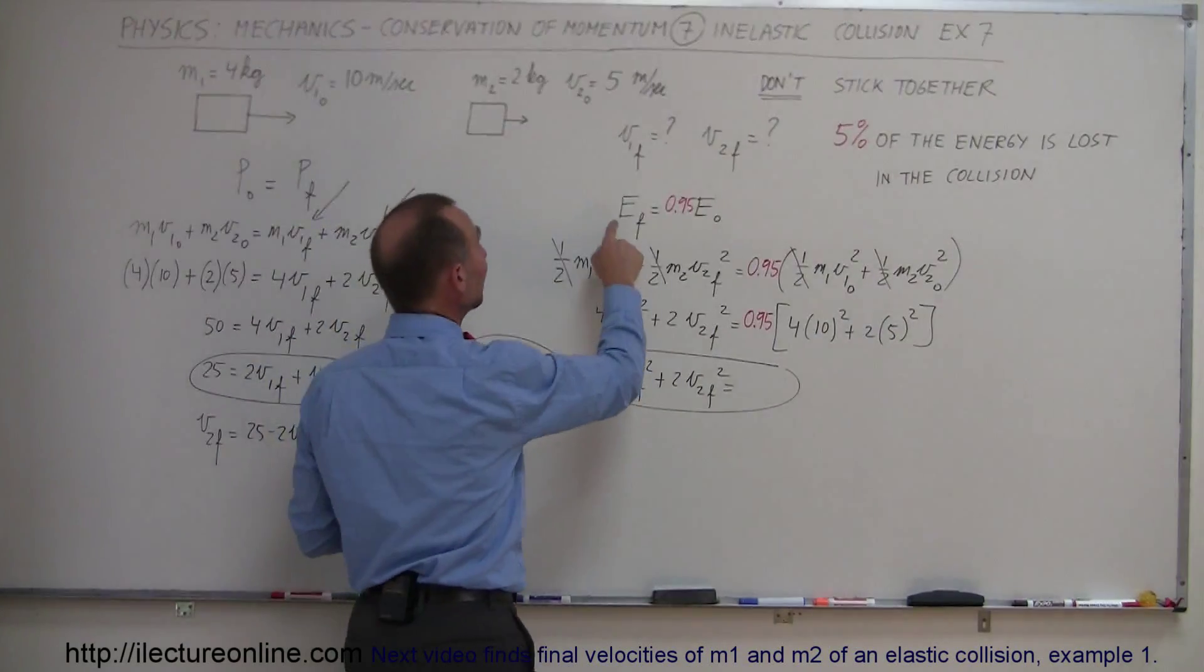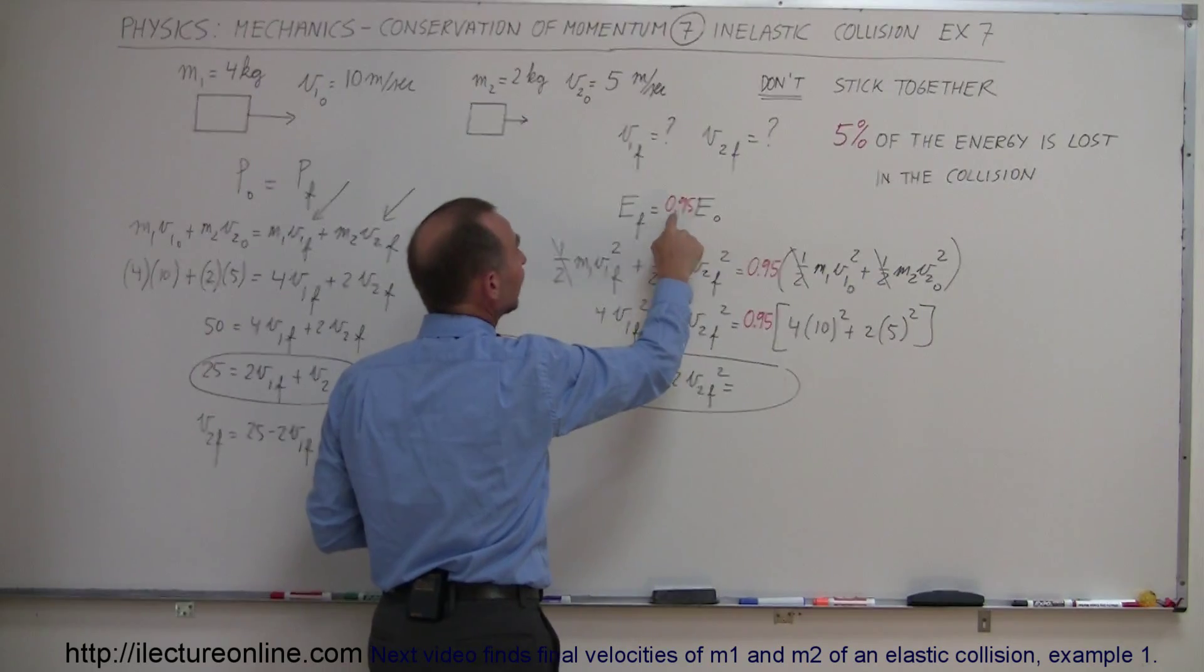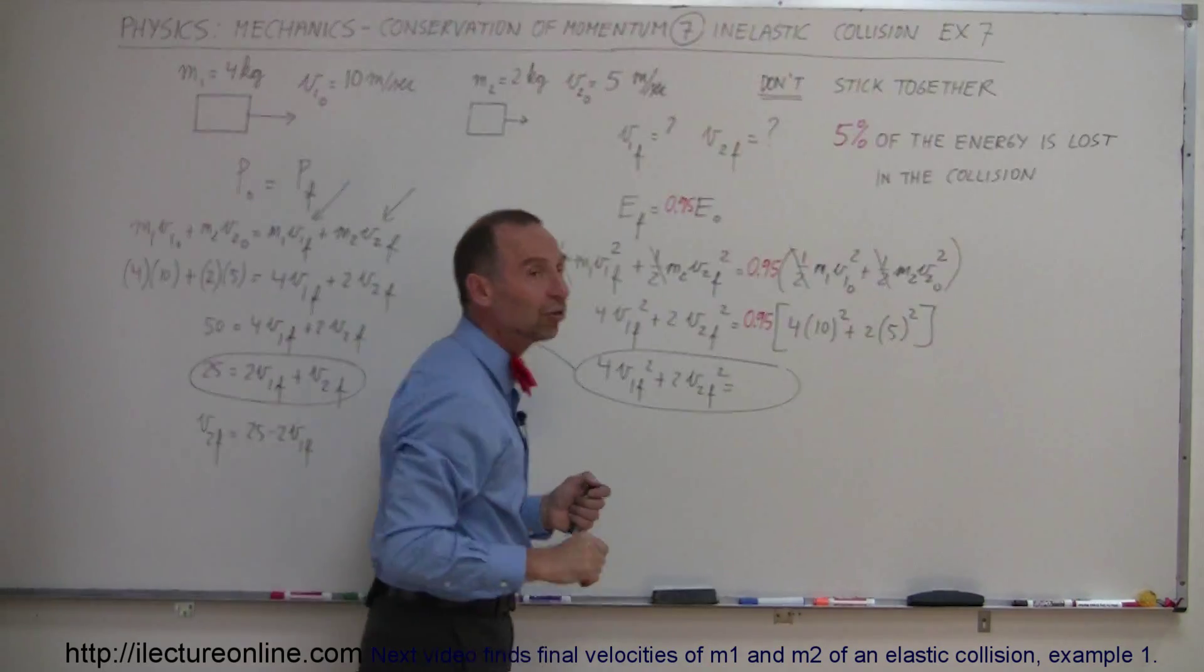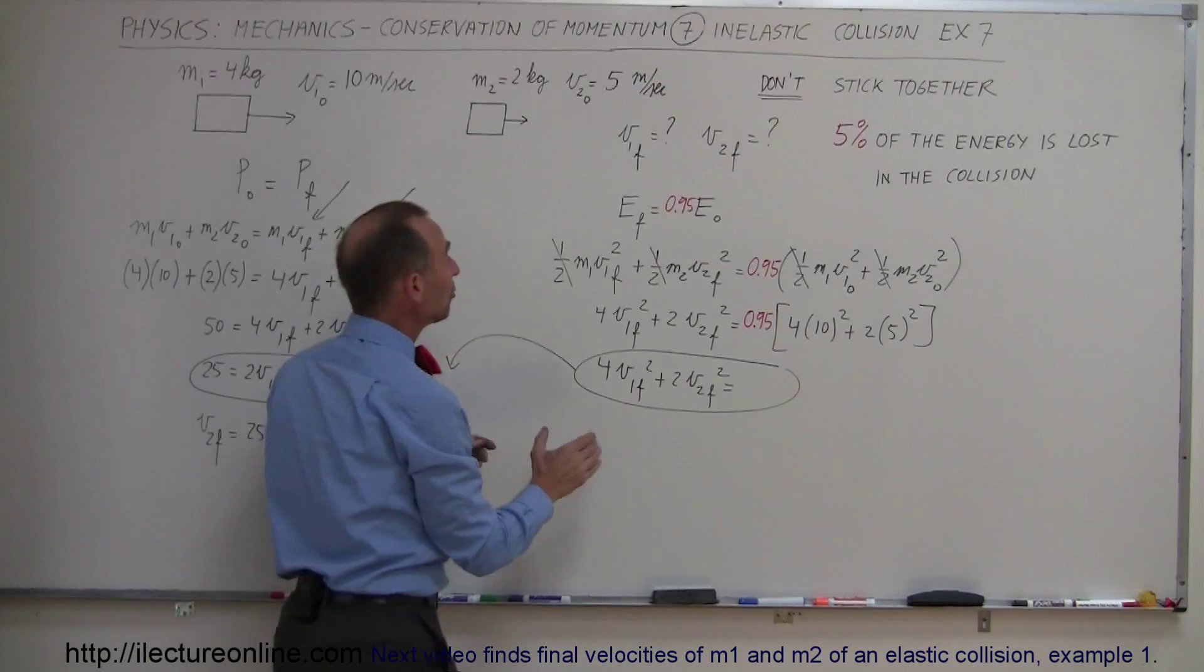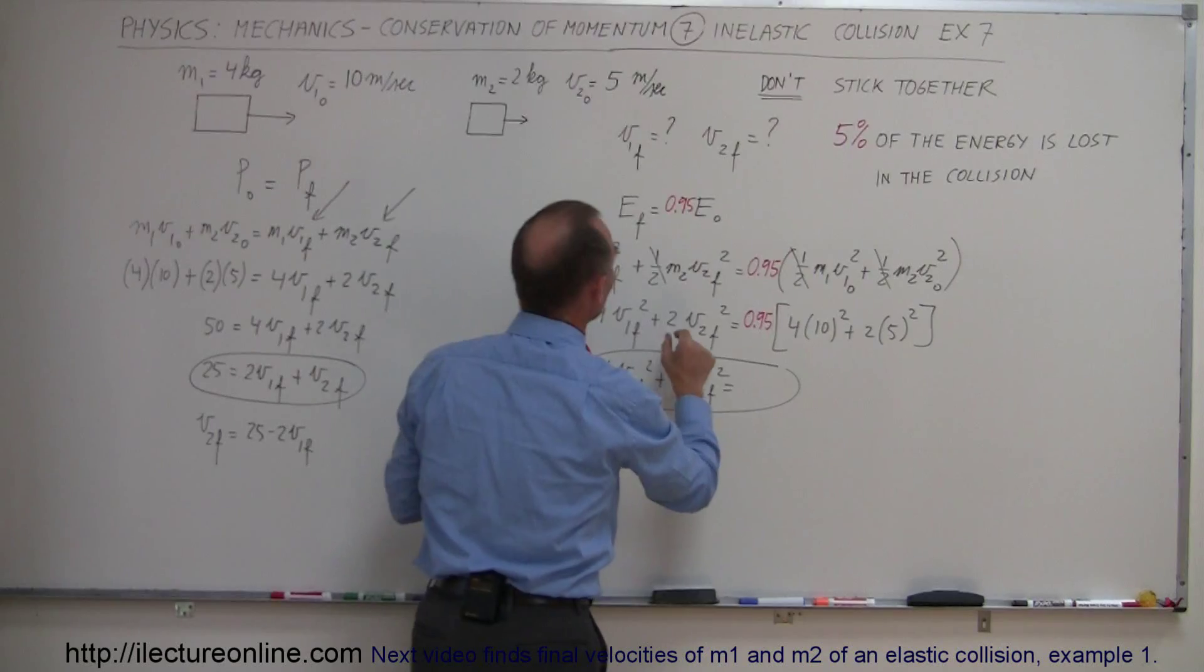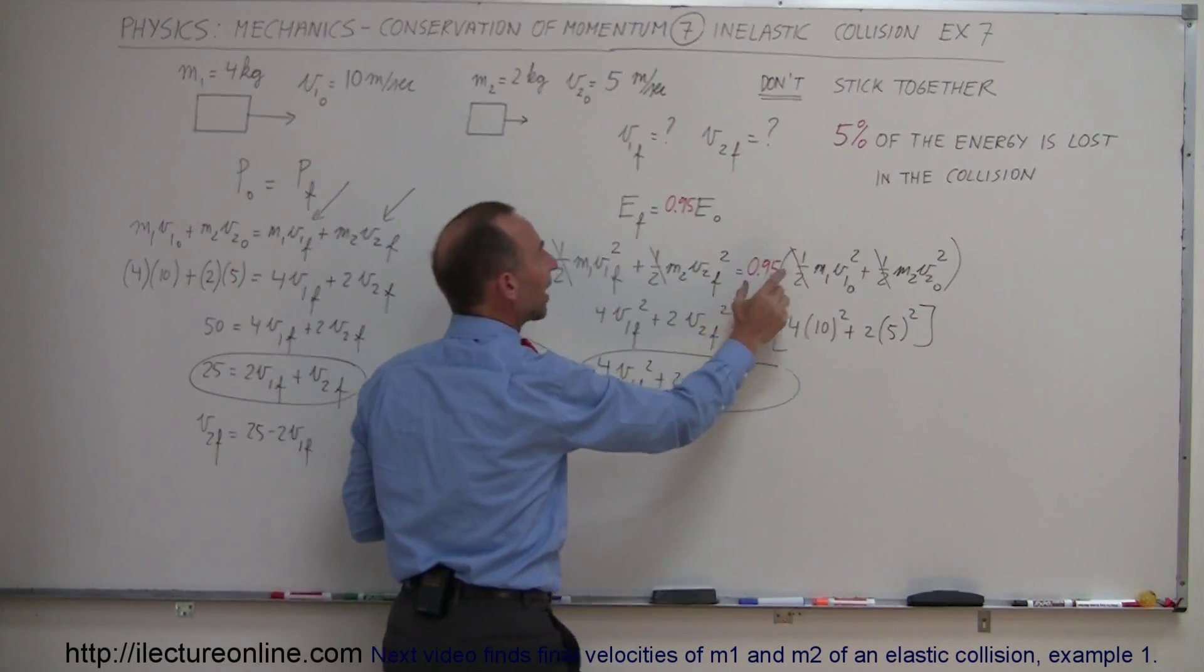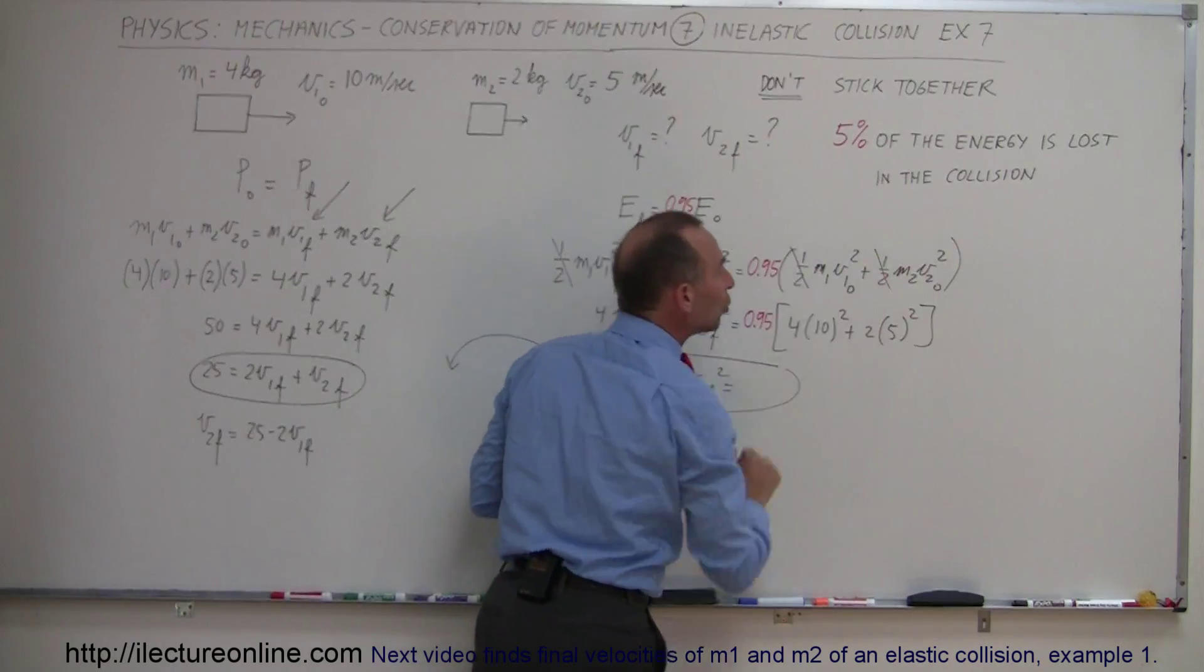So what I said was that E final, since I lost 5% of the energy, E final therefore is only 95% of the original energy. We lost 5% which means that the kinetic energy of the first object plus the kinetic energy of the second object after the collision is equal to 95% or 0.95 the kinetic energy initially of the two objects.